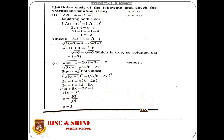Now come to part number two: under root (3x - 1) minus 2 under root (8 - 2x) equals zero. So under root (3x - 1) equals 2 under root (8 - 2x). First we shift the right side term, then take squaring on both sides. After this we have 3x - 1 equals 4(8 - 2x). Multiply 4 inside the parenthesis: 4 times 8 is 32 and 4 times 2x is 8x. Shift 8x to left side and minus 1 to right hand side: 3 plus 8 gives 11x and 32 plus 1 gives 33. So x equals 33 divided by 11, which equals 3.